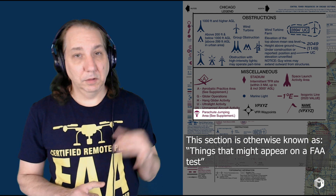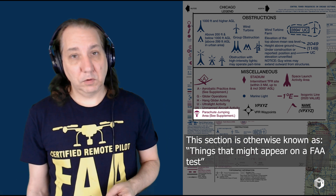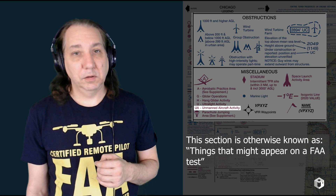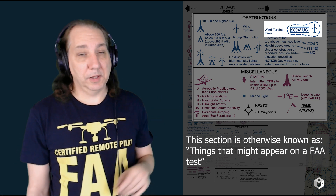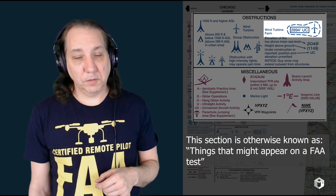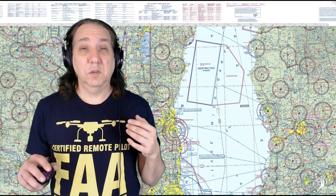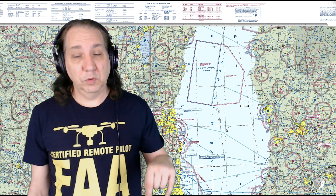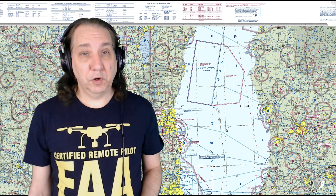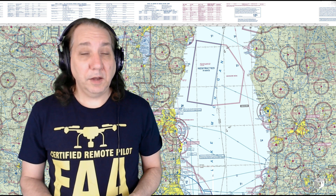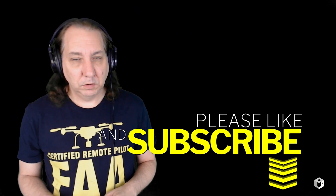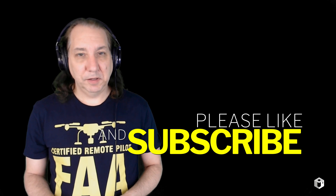A few more chart symbols to recognize: a parachute jumping area symbol — know how to recognize and read it. 'UA' in red indicates unmanned aircraft activity. A wind turbine farm symbol — just recognize it so you know how to read that part of the chart. The most important thing is to download aeronautical charts and look at them. The FAA has charts available on their website — download the one for your area and use this video and the study guide to understand what you're seeing. That's it for this chapter. Best of luck studying, pilot in command — fly safely, and don't forget to subscribe.